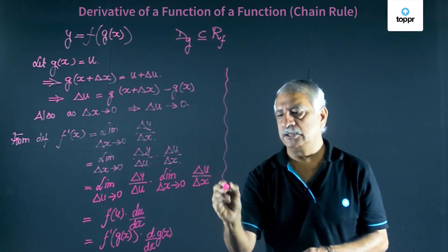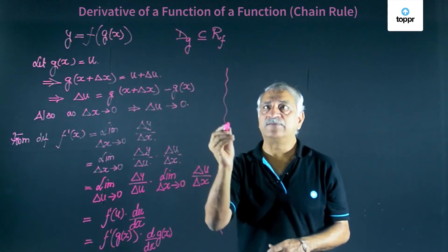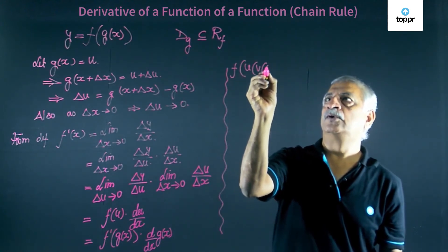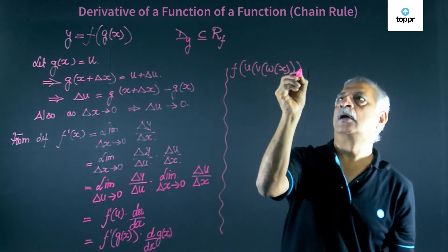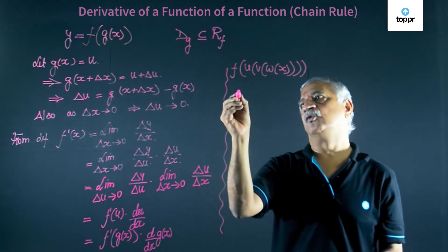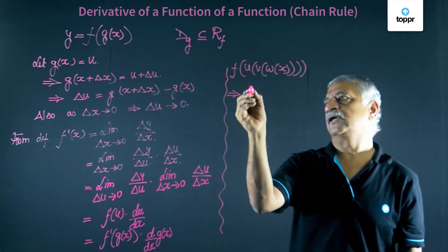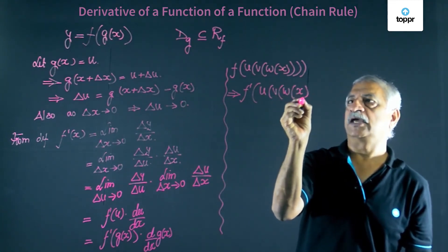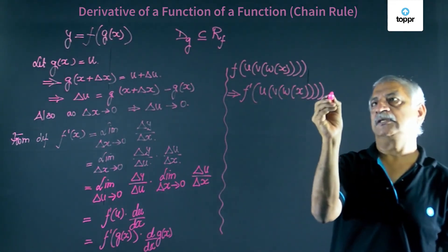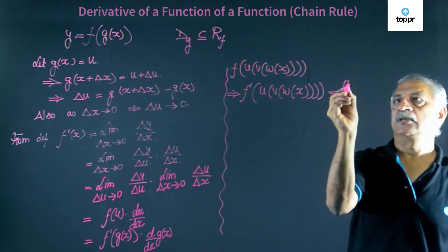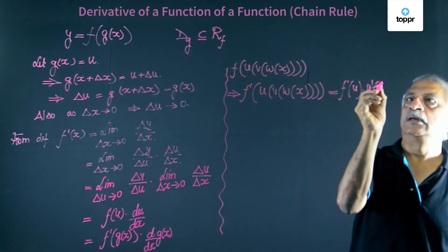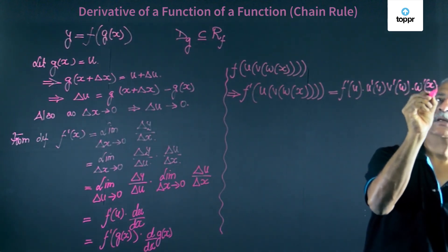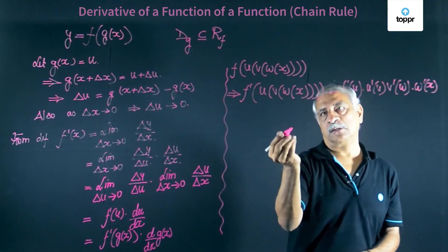Well, instead of say f as a function of x, I may have f of u of v of w of x. Then following the same rule, this follows that f dash u v of x is equal to f dash u, u dash v, v dash w, w dash x. This is chain rule for three functions.